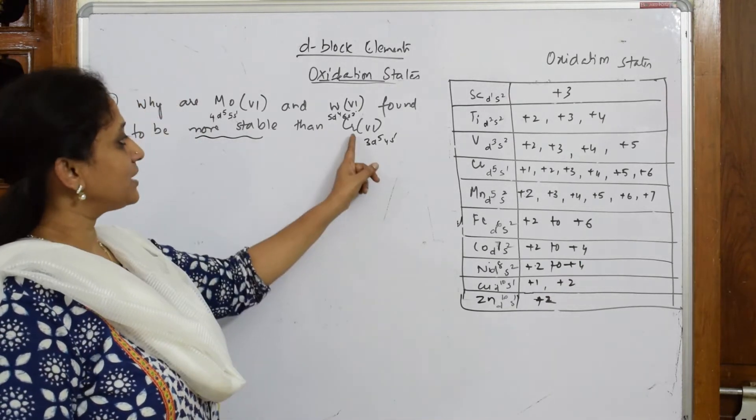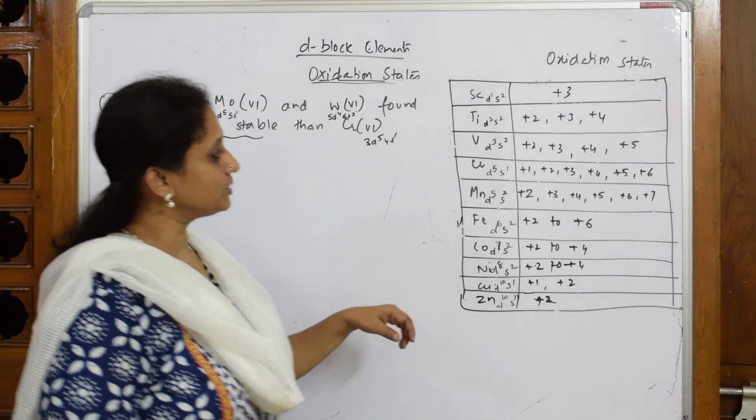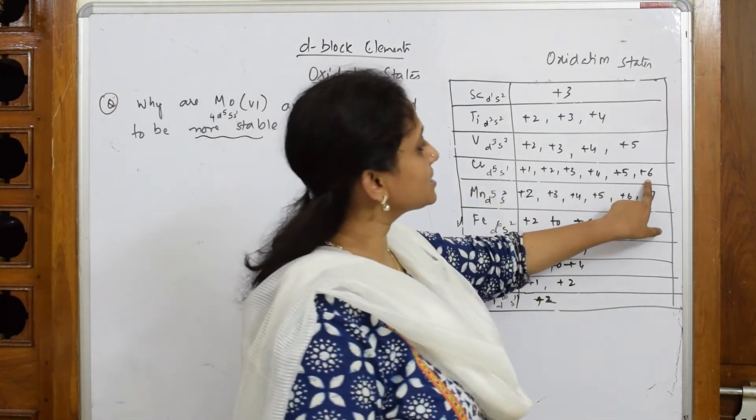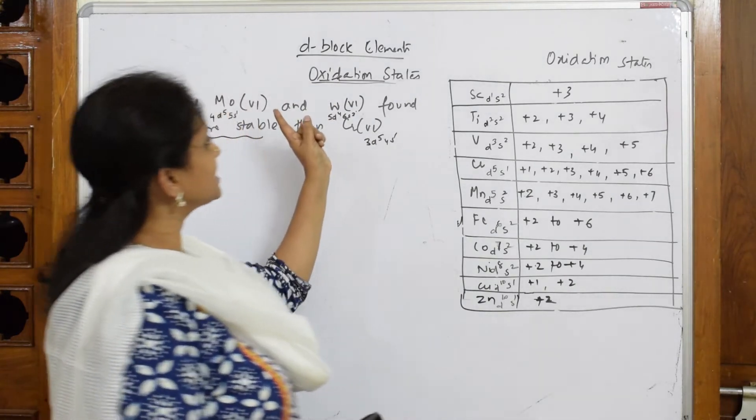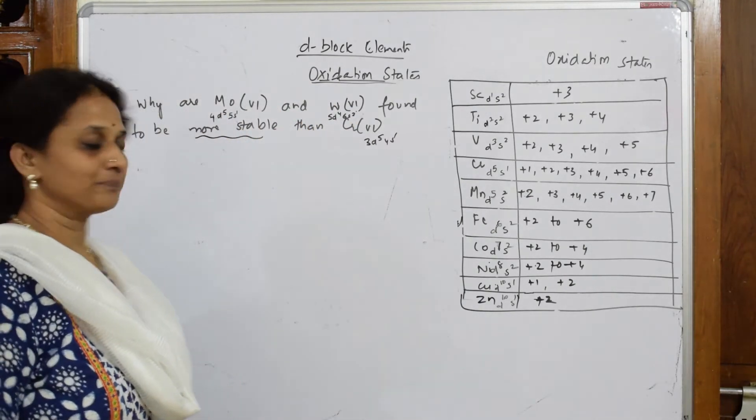more stable compared to chromium(6)? Why is this oxidation state very less stable compared to molybdenum in the next series and tungsten in the next series? So one such